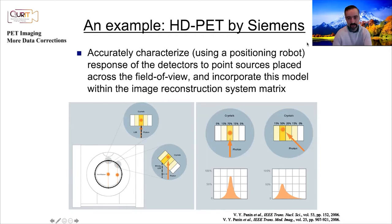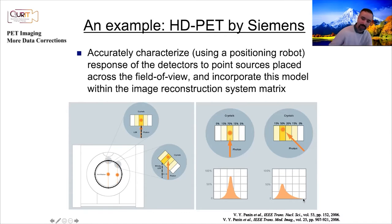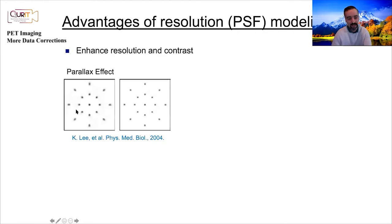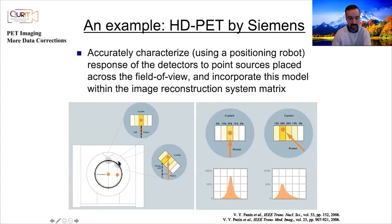Here's an example of how PSF modeling is characterized: a robotic arm moves point sources all over the field of view, measuring how the signal spreads. At 90 degrees you get one profile with scattering only; at an angle you get an asymmetric profile due to both scattering and penetration. This is modeled within image reconstruction. This PSF modeling approach addresses the parallax effect where resolution degrades as you move away from the center of the field of view.